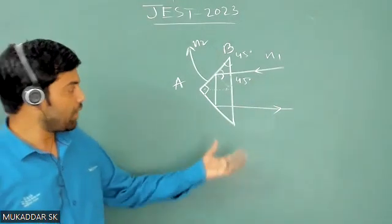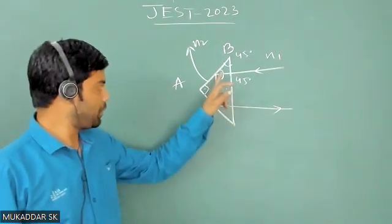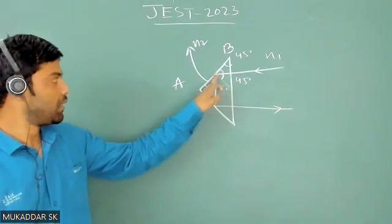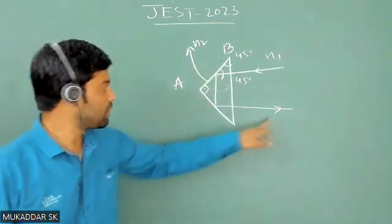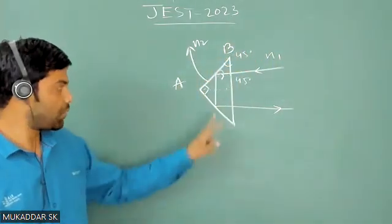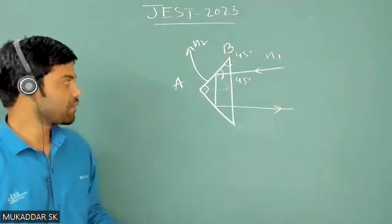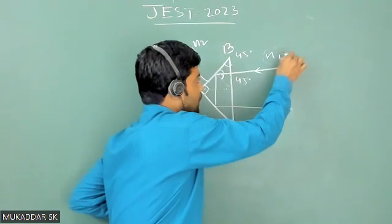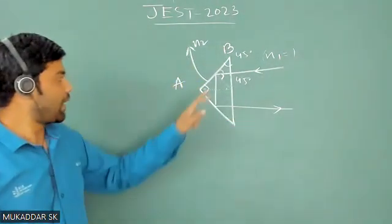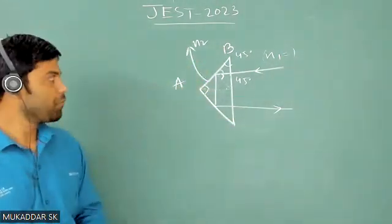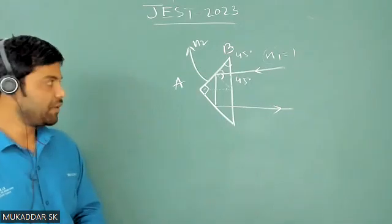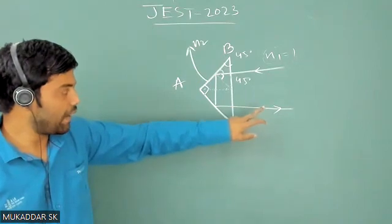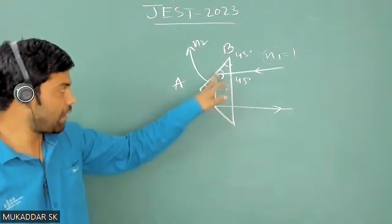Now, in order to get fully reflected, there should be total internal reflection of the light beam here. This side, they have mentioned that this prism is surrounded by air having refractive index n1. So I'll assume that n1, the refractive index of air, is 1, and n2 is the refractive index of your prism.